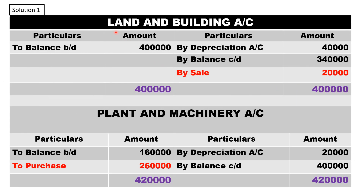Prepare the land and building account: bring down the opening balance of four lakh, record depreciation of forty thousand on the credit side, and record the closing balance of three lakh forty thousand. Debit side is more, so debit minus credit gives twenty thousand, treated as sale of land and building, which comes under investing activity.